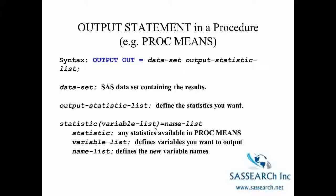For example, if we are using proc means and we were interested in creating a new SAS data set that has the mean age of our observations, our statistic would be mean — that's the name of the statistic — and our variable, let's say it was age, would be age put in parentheses. And then if we want to give it a new name such as mean age, it would be statistic, open parentheses age, close parentheses, equals mean age. So the statistic is any statistic available in proc means, the variable list defines the variables you want to output, and if we listed numerous variables they would create the mean for each of those variables on our new output SAS data set. And then we can create new variable names for those new variables.